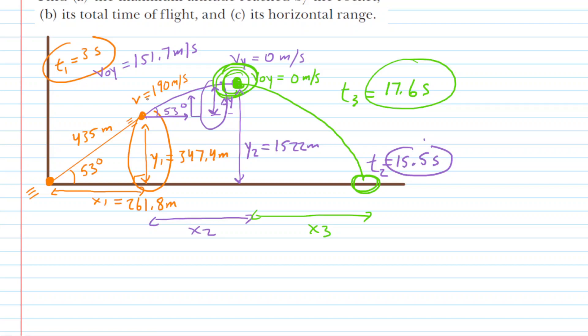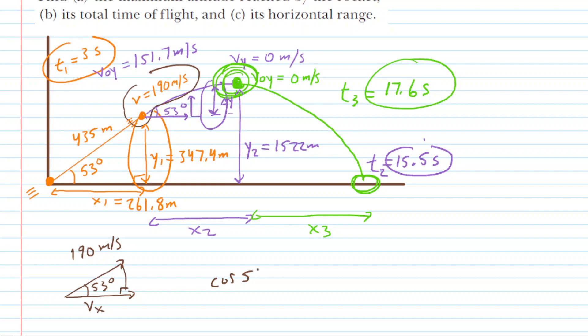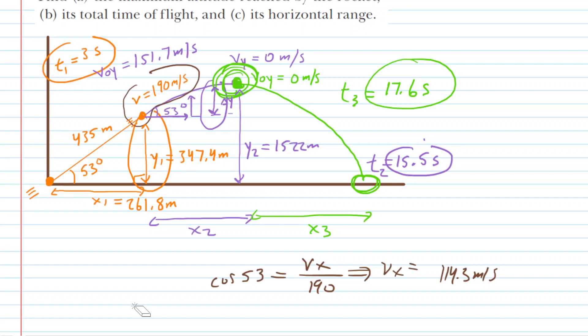To find x2 and x3, we consider the velocity in the x direction. The rocket was moving at 190 meters per second, and we can find the x component. With the 53-degree angle and the right triangle, the cosine of 53 equals Vx over 190. Multiplying both sides by 190 gives 190 cosine of 53, which equals 114.3 meters per second. That is the horizontal velocity during both x2 and x3.